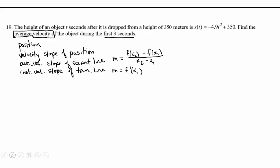The average velocity is going to be s(t₂) - s(t₁) over t₂ - t₁. The slope formula: y₂ - y₁ over x₂ - x₁.